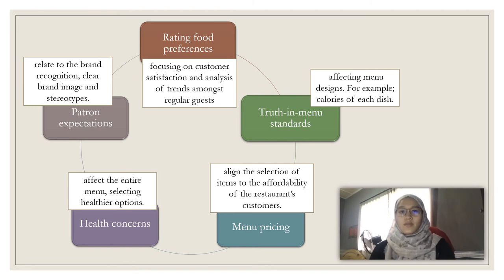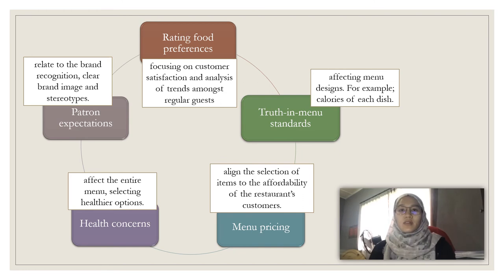Then, rating food preferences — focusing on customer satisfaction and analysis of trends among regular guests. Truth in menu standards — it will affect menu design; for example, the calories of each dish. Menu pricing — it aligns the selection of items to the affordability of the restaurant's customers. Health concern — it affects the entire menu by selecting healthier options. Lastly, pattern expectation — it relates to brain recognition, clear brain image, and also stereotypes.